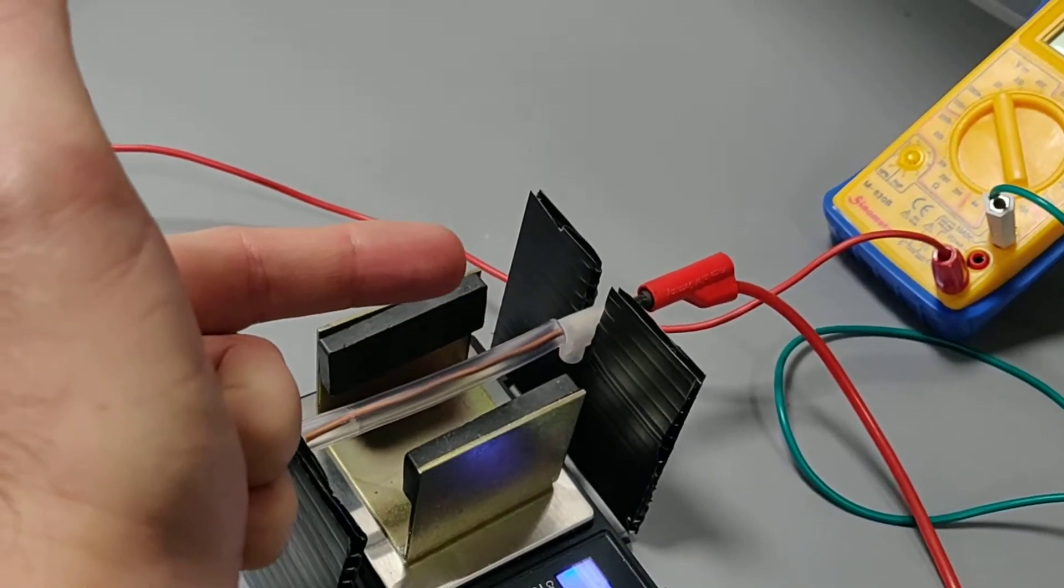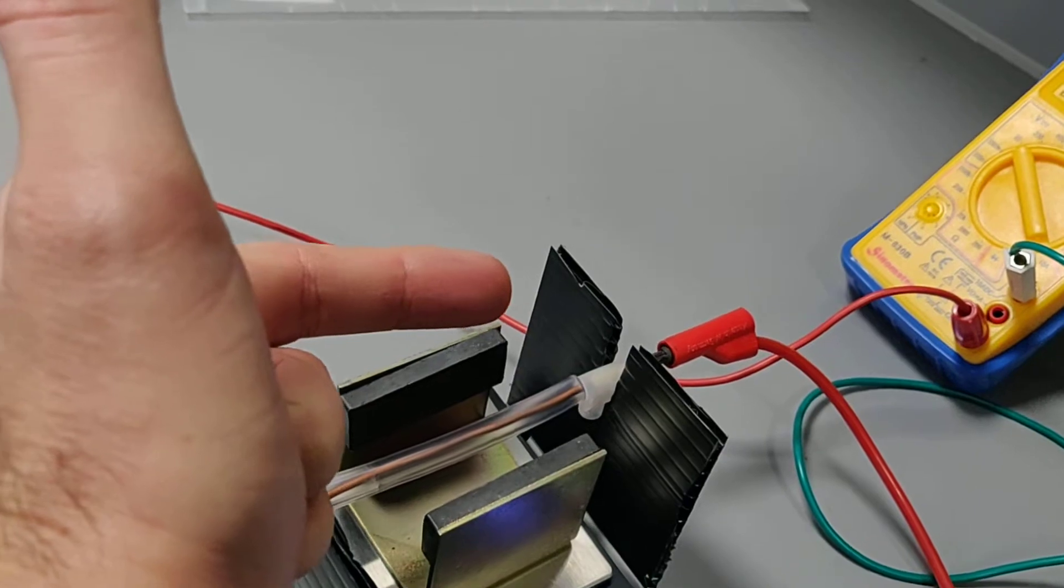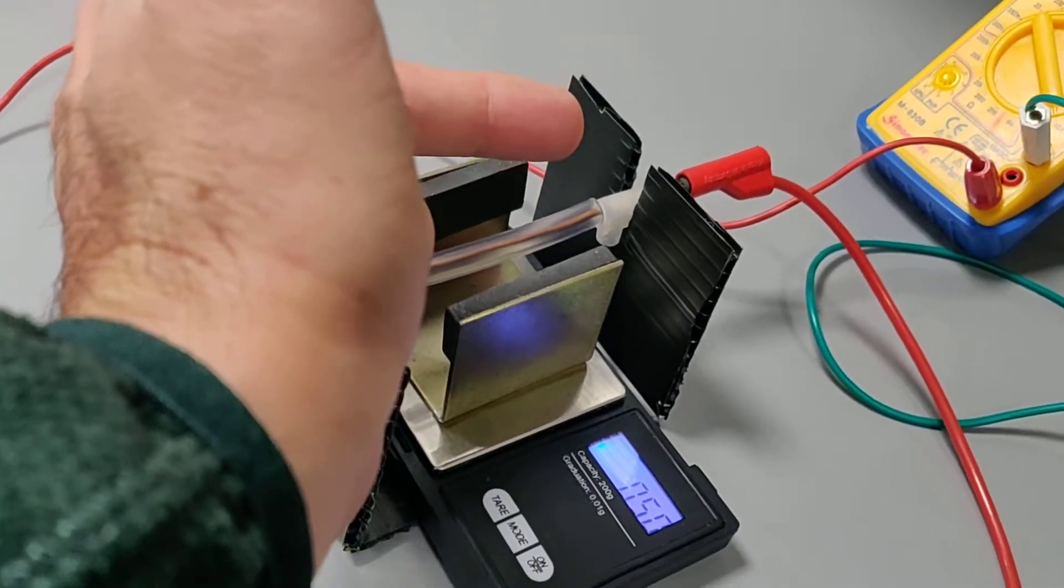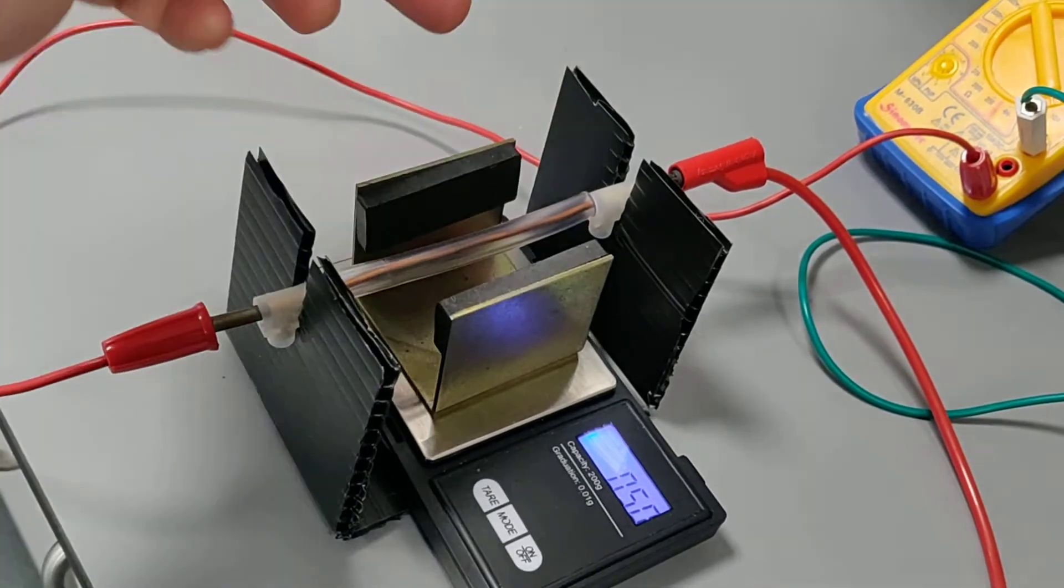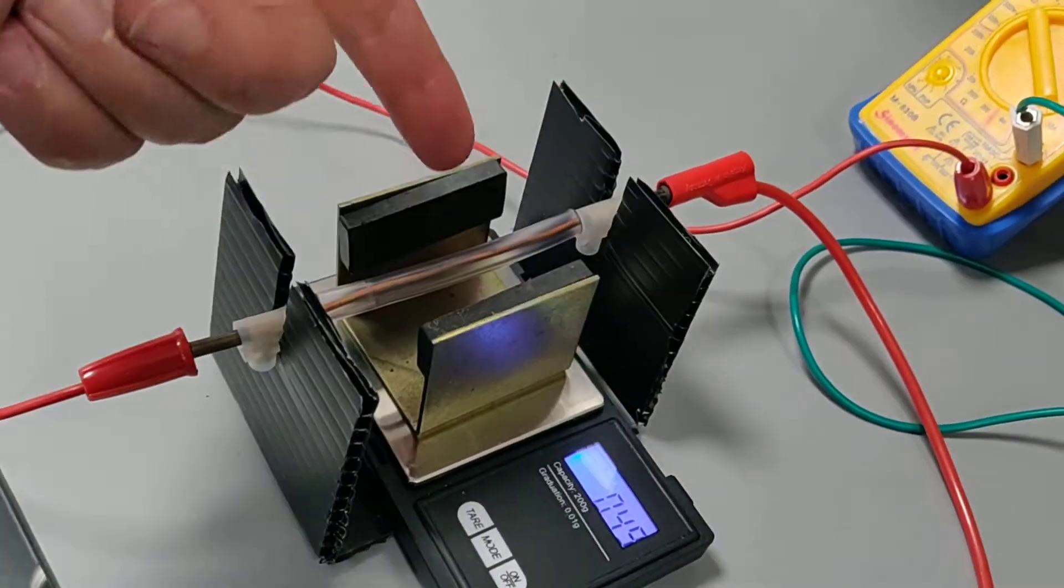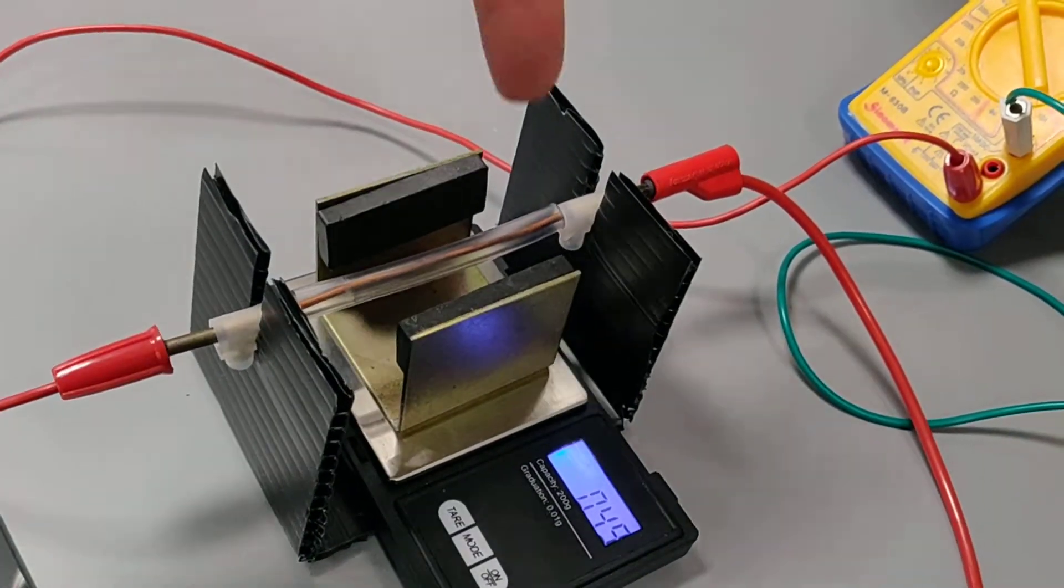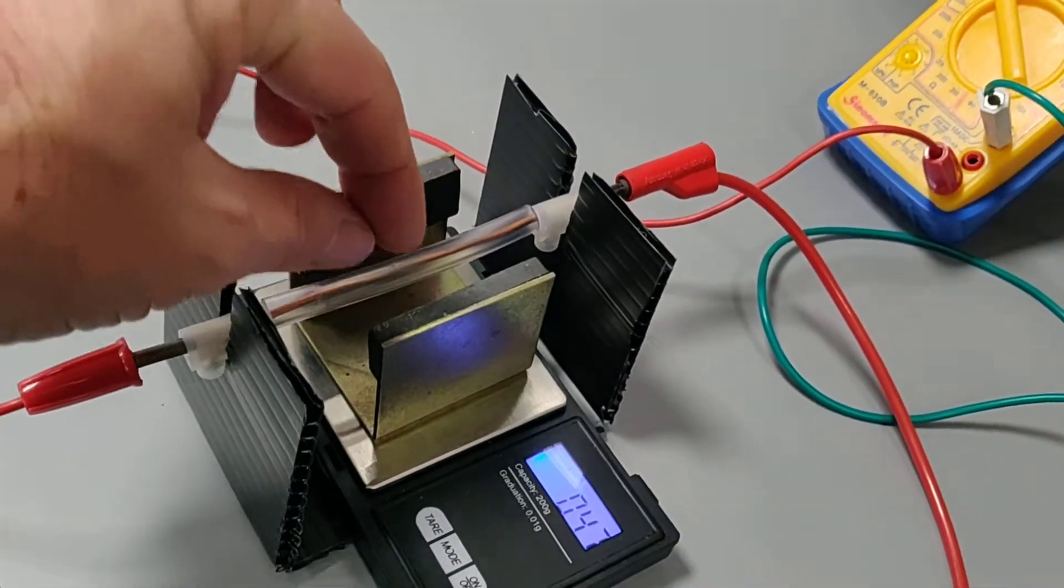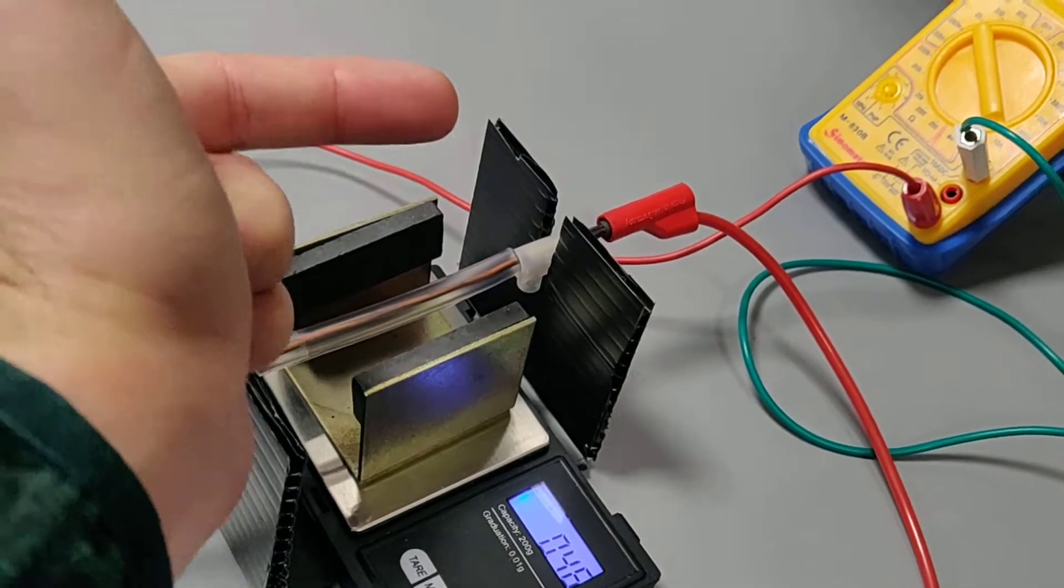The force on the wire must be in the upward direction, because the scale is getting a positive reading, which means the scale is being pushed down. So the force on the wire must be up by Newton's third law. That means there's an equal and opposite force pushing downward on the scale.